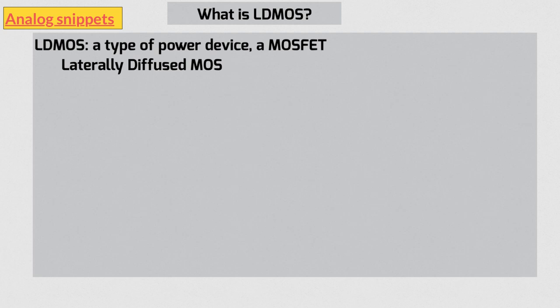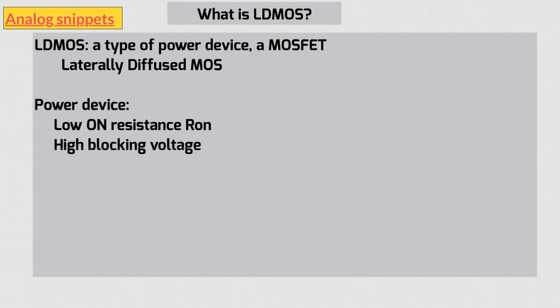Let's now look at these terms in more detail. Power devices in general have two defining properties: a low on-resistance to reduce the conduction losses, and a high blocking voltage to sustain high voltages involved in high power circuits.